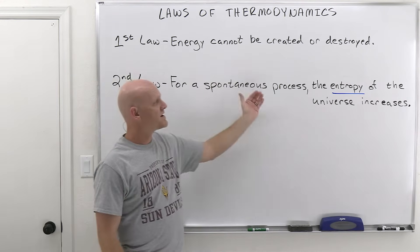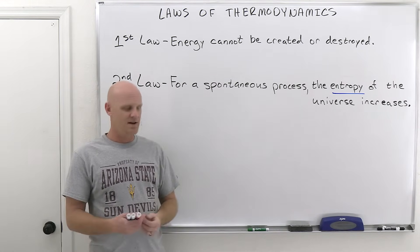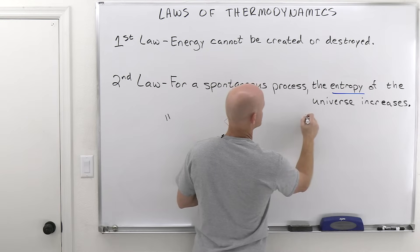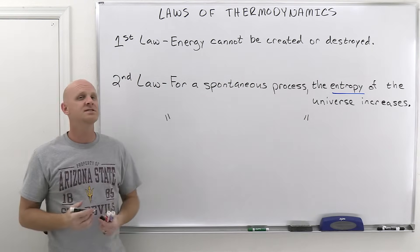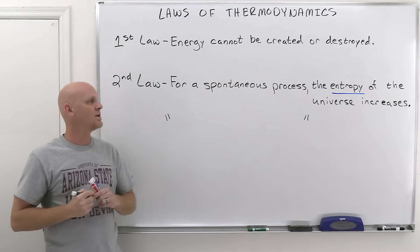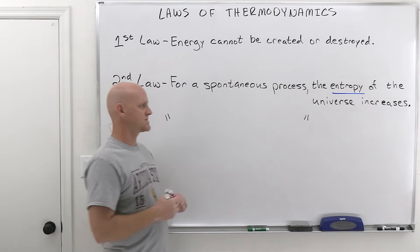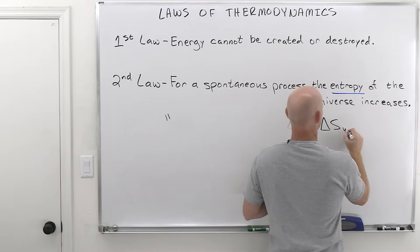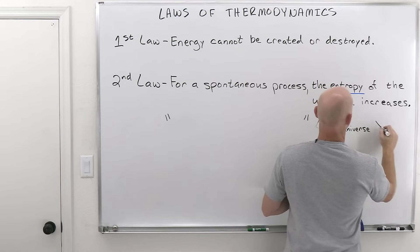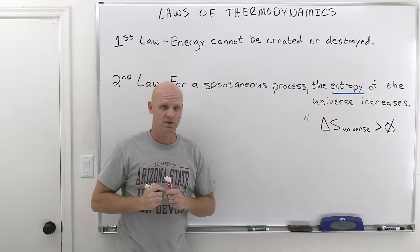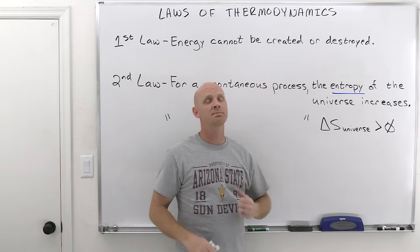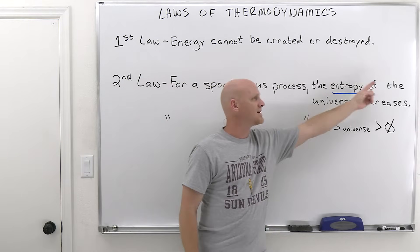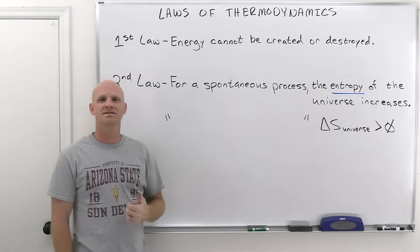The second law: for a spontaneous process, the entropy of the universe increases. Another way to phrase this: for a spontaneous process, delta S of the universe is greater than zero. If the change in entropy is positive, that means it's increasing — so both phrasings mean the same thing. A third way expresses it as a little equation, which we'll get to next.